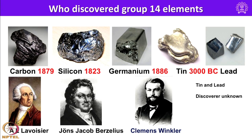Let us look at the discoverers of group 14 elements. Although carbon is known since antiquity, it was actually identified by Lavoisier in 1789. Silicon was discovered in 1823 by Berzelius, and germanium by Clemens Winkler in 1886. Tin and lead are known since 3000 BC, so we do not have clear information about who was responsible for their discovery.